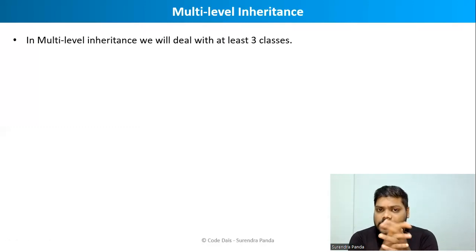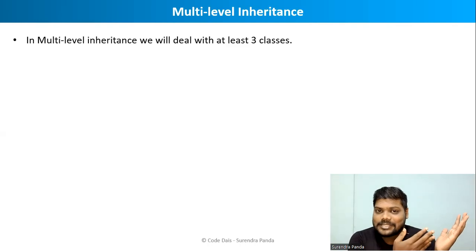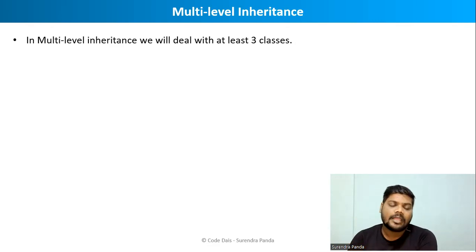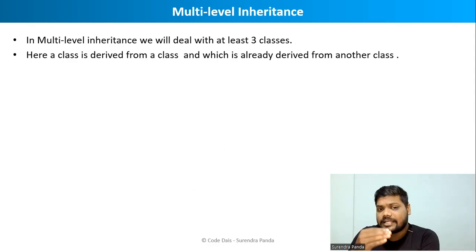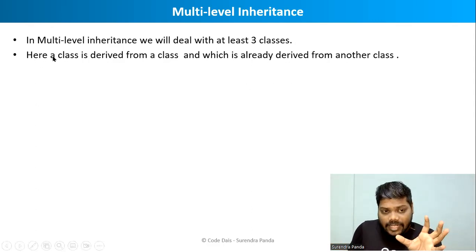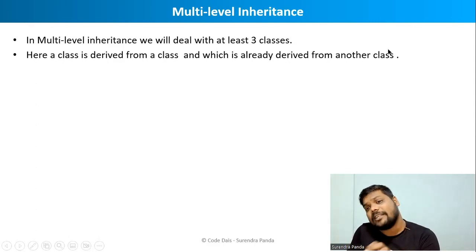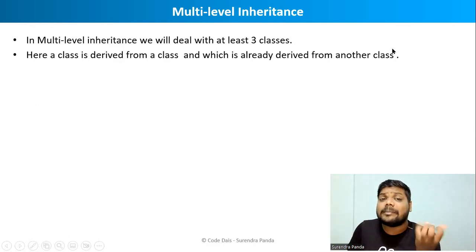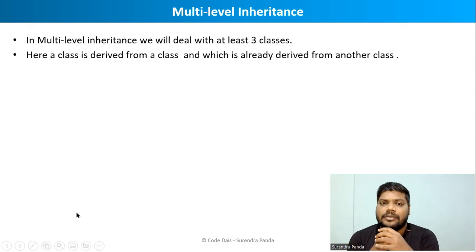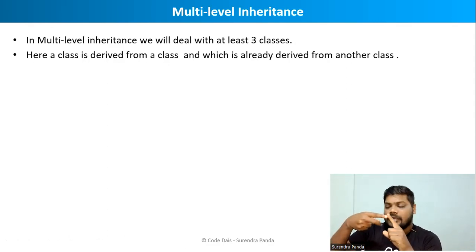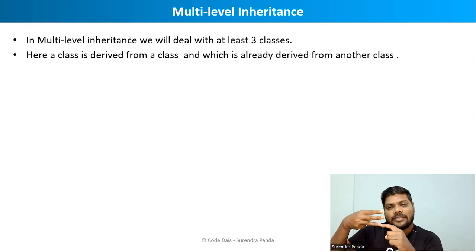In multi-level inheritance, we will deal with at least three classes. In the case of single inheritance, two classes are sufficient, but here minimum we require three classes. A class is derived from a class which is already derived from another class. For example: parent, child, grandchild — this is a perfect example of multi-level inheritance.